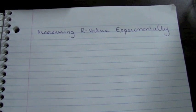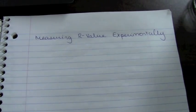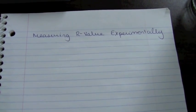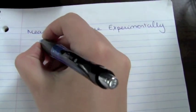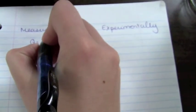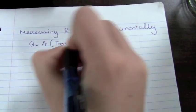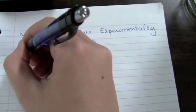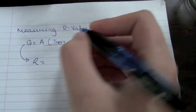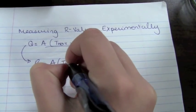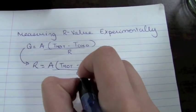The final method that we're going to look at for measuring the R value is to measure it experimentally. In order to do this, we simply need to rearrange the first equation that we looked at in order to express R in terms of other valid variables that we know something about. As you remember, the first equation that we had was Q is equal to A times T-hot minus T-cold, all divided by R. So that we can write R as a function of other things. For example, R is equal to A times T-hot minus T-cold, all divided by Q. It's as simple as that.